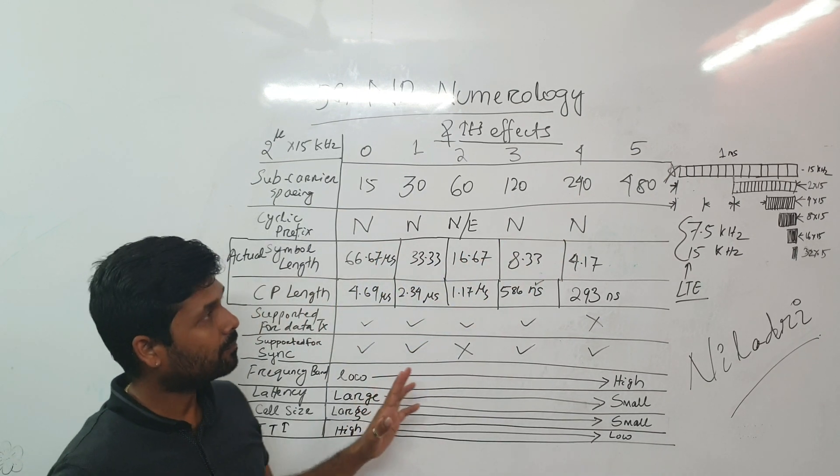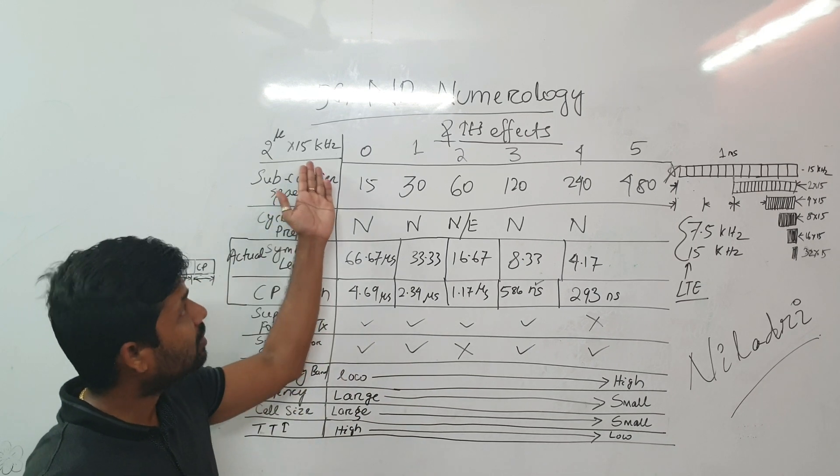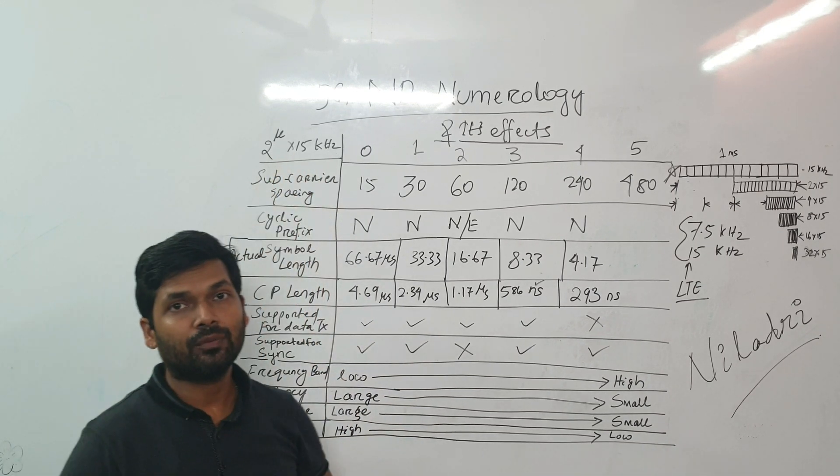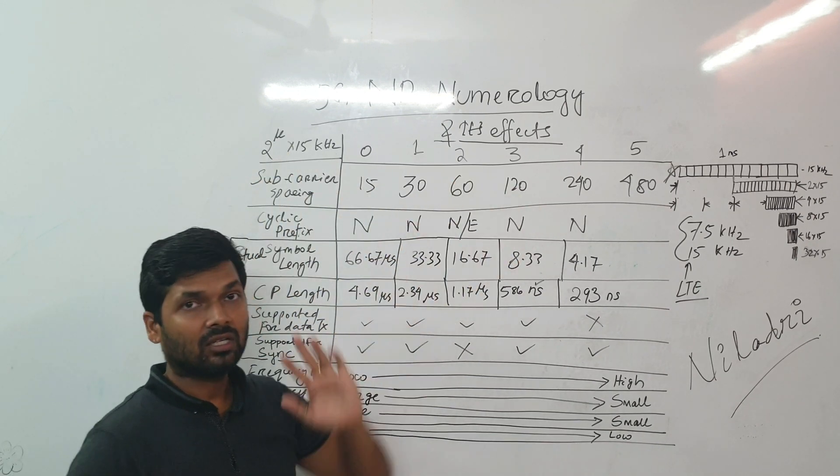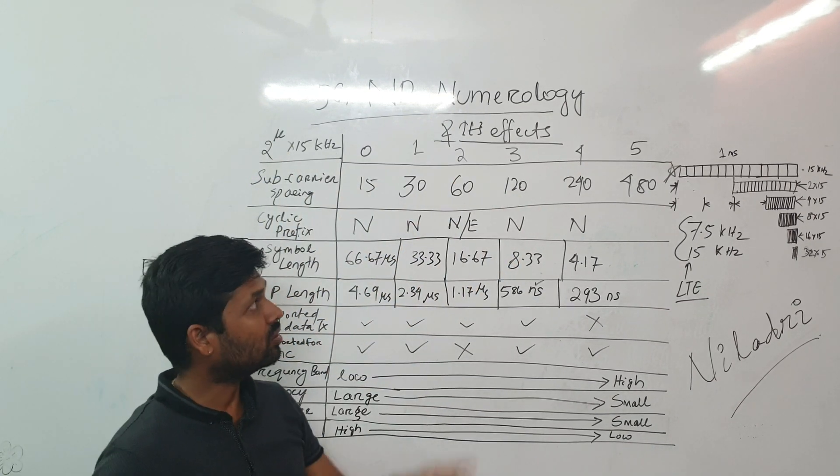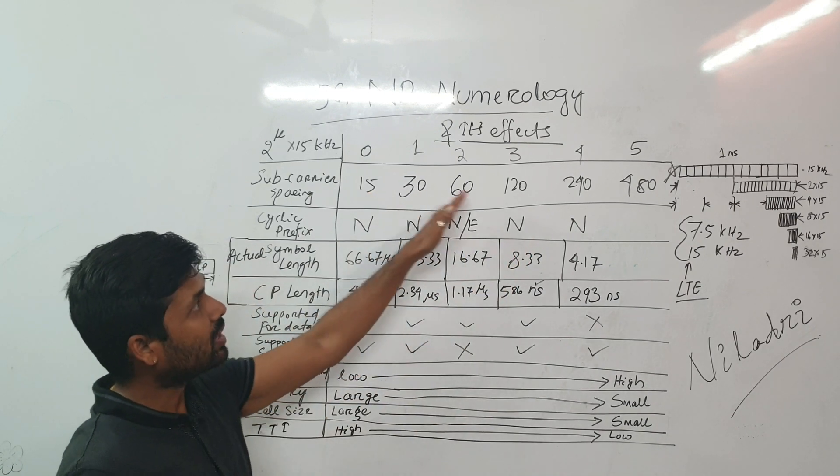So how they are obtained? So we have a formula that is 2 to the power mu into 15. So this one is the formula through which we have obtained this different subcarrier spacing or different subcarrier. So these are in kilohertz.